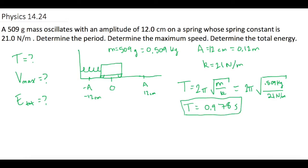So now for the second part, they want the maximum speed. The maximum speed equation from the chapter summary is Vmax equals 2π times the frequency times the amplitude.